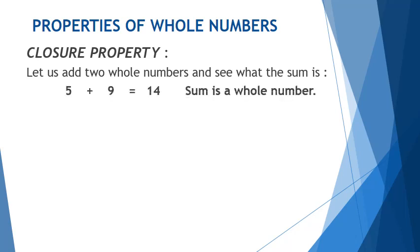5 plus 9. Now, 5 is a whole number, we are adding 9 to it, and 9 is also a whole number. The answer is 14. 14 is the sum of 5 and 9, which is also a whole number.